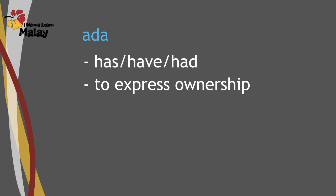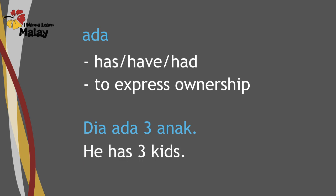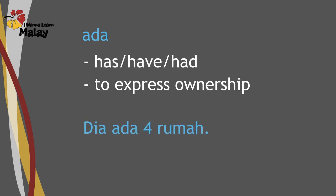If someone has something, we say 'dia ada sesuatu'. For example, if you hear 'dia ada tiga anak' — that simply means 'he has three kids'. To show ownership: 'dia ada empat rumah' means 'she has four houses' or 'she owns four houses'.